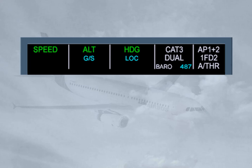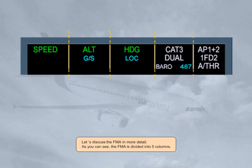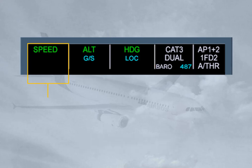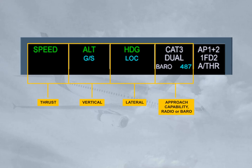Let's discuss the FMA in more detail. As you can see, the FMA is divided into five columns. The first column is dedicated to thrust — this is where the autothrust modes appear. The second one displays the vertical modes of the autopilot and flight directors. The third one displays the lateral modes of the autopilot and flight directors. The fourth one gives the approach capability of the autoflight system and the radio or barometric minimums,